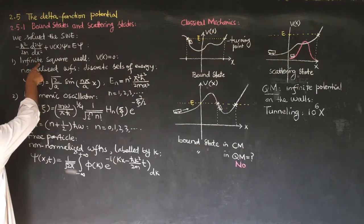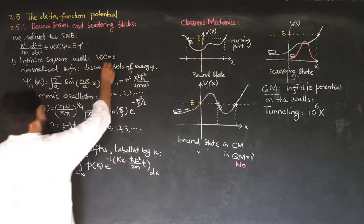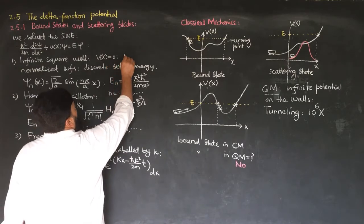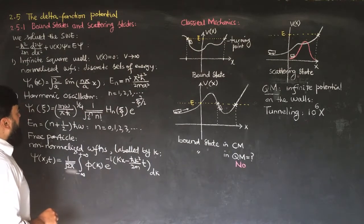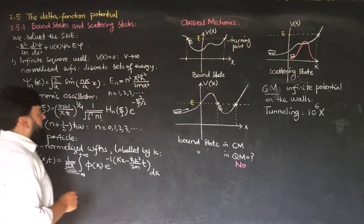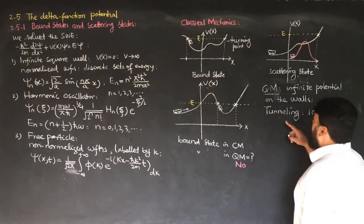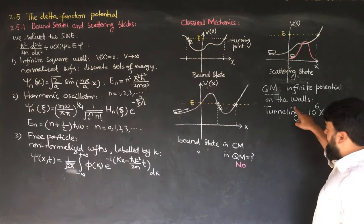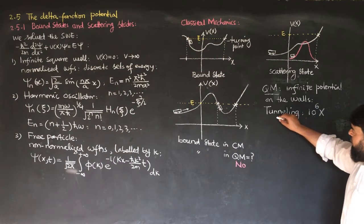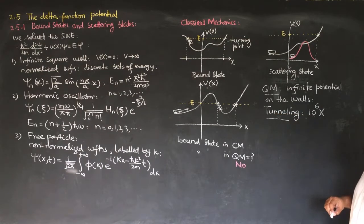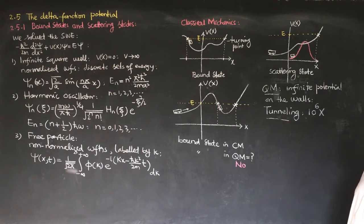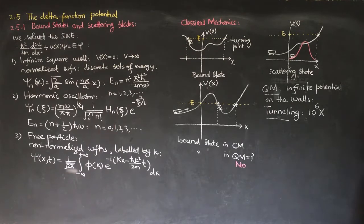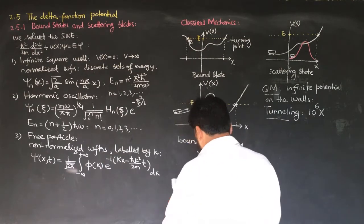For a bound state, we must apply infinite potential on the walls. Here, V(x) was zero inside the well while V was infinite on the walls. Such a situation will cause no tunneling, while for any finite potential in quantum mechanics we have the possibility of tunneling.